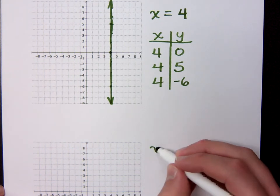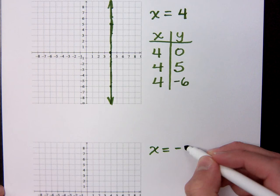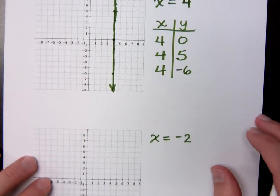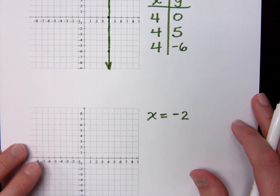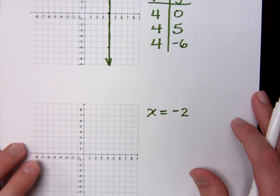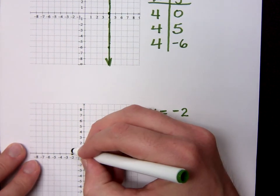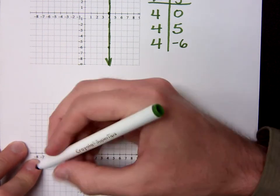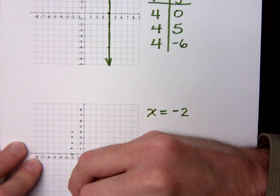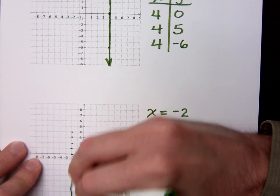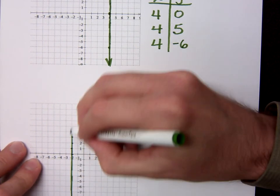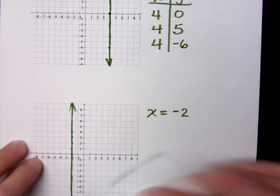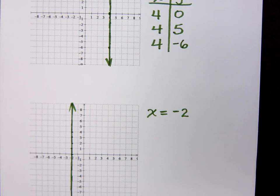All right. What if I asked you to graph this? If I said X equals negative 2, how do you think you would graph that guy? It's when X is equal to negative 2, and X is always going to be equal to negative 2, right? It's a vertical line.